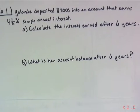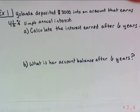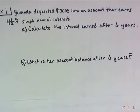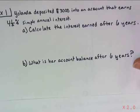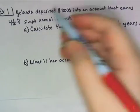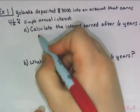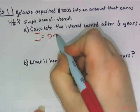Let's take a look at these examples. Yolanda deposited three thousand dollars into an account that earns four and a half percent simple annual interest. The word 'simple' is the important part because it tells us which formula to use. Since it's simple interest and we want to calculate the interest earned, we're going to use I equals PRT.